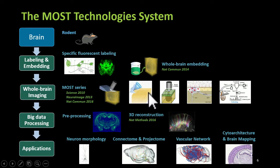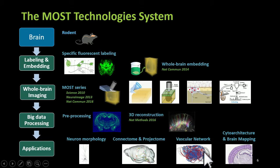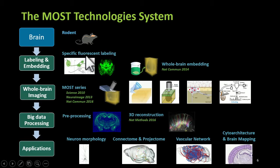In collaboration with Hongkui Zeng from the Allen Brain Institute, we imaged the giant brain from the primate, which attracted notice in Nature. Here I show a brain-wide projection of a single pyramidal neuron at the prefrontal cortex. As you can see, the neuron can project to both sides of the brain, and the morphology is very intricate and complex.